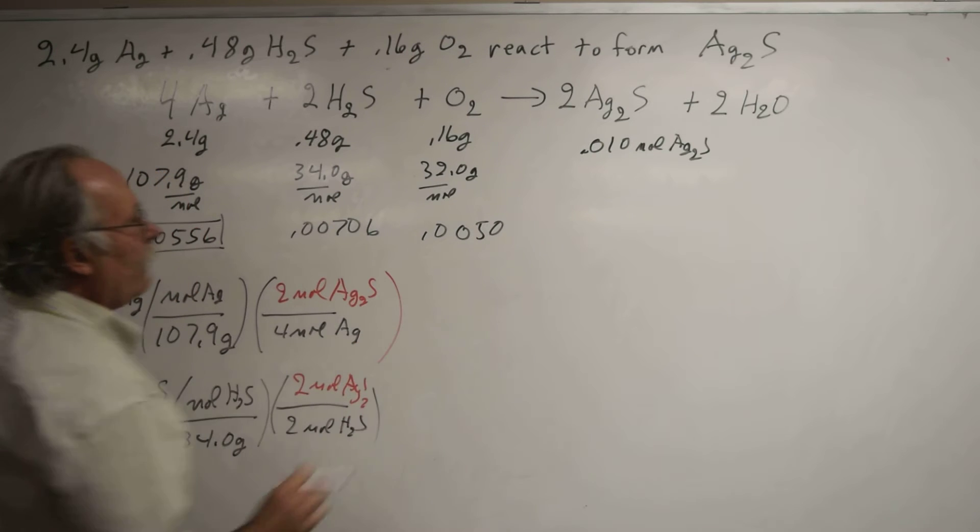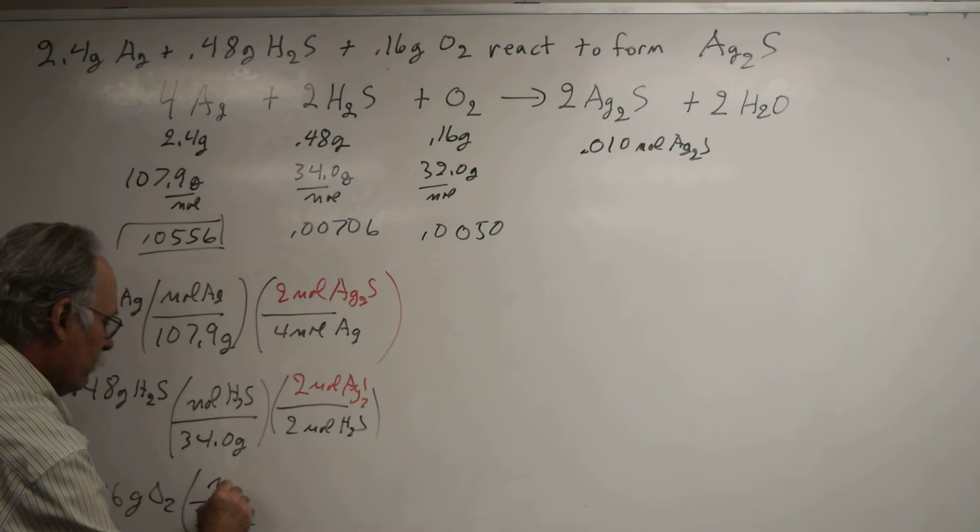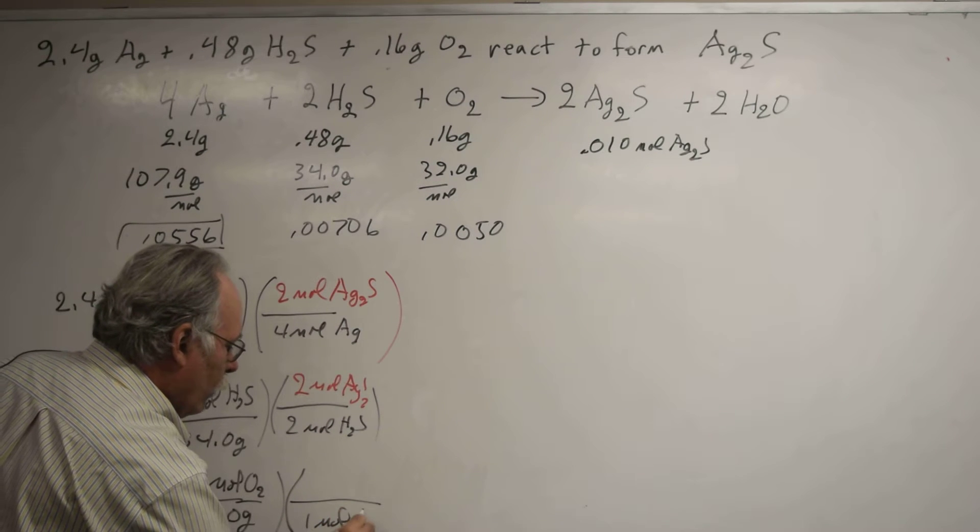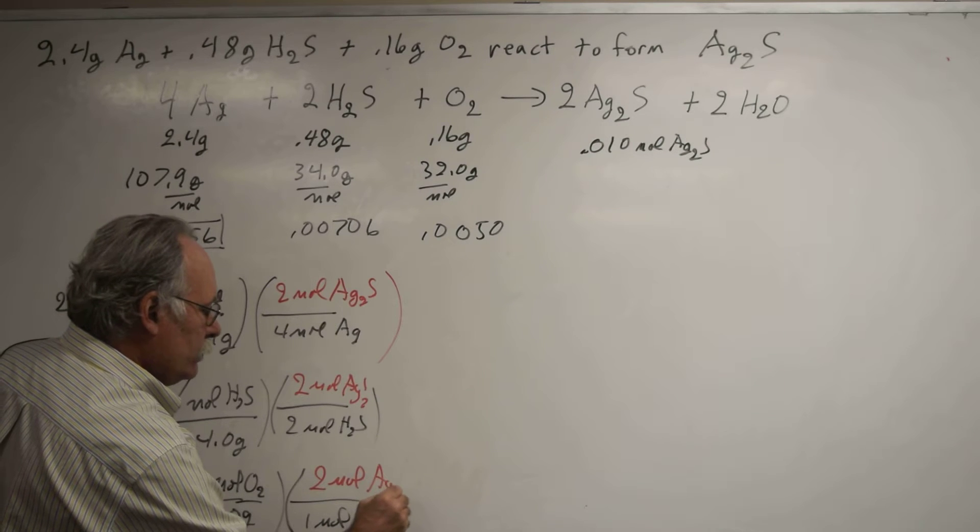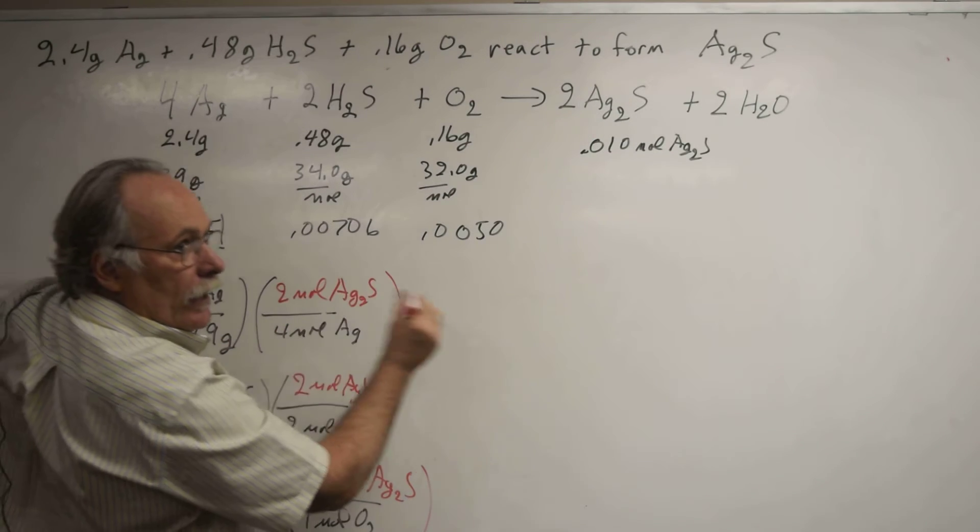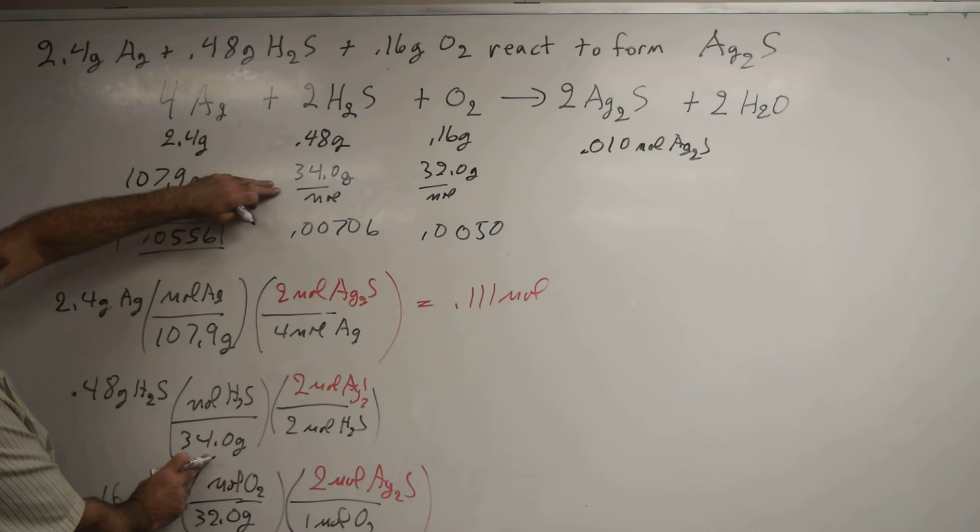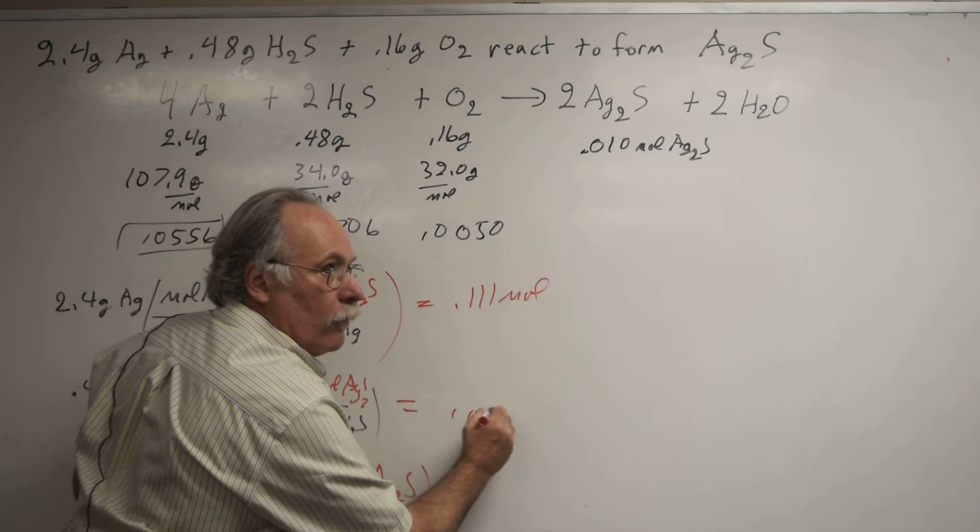Now I could take the number we've already identified as the limiting reagent: 0.16 grams of O2, divided by its molar mass, 32.0 grams per mole of O2, then divided by its coefficient, 1 mole O2. That was equal to 0.005, and we multiplied that by 2 moles of Ag2S. If I had gone the long way, I could have taken 2.4 divided by 107.9, and then said for every four of these, I made two of these. The answer would have been 0.111 moles. I could have taken 0.48 grams divided by its molar mass and said for every two of these, I make two of these. That would have given me 0.0141 moles.